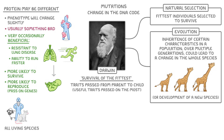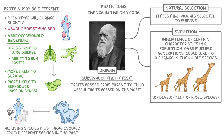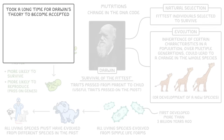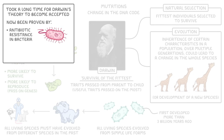This means that all current species must have evolved from different species sometime in the past. And if we take it back far enough, the theory of evolution by natural selection implies that all living species must have evolved from the simple life forms that first developed more than 3 billion years ago. Just like countless other important theories, it took a really long time for Darwin's theory to become properly accepted by the scientific community. But it's now been proven multiple times over, from things such as the development of antibiotic resistance in bacteria, where we can literally see evolution taking place, or by looking at fossil records.